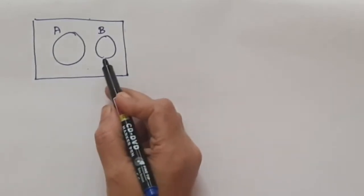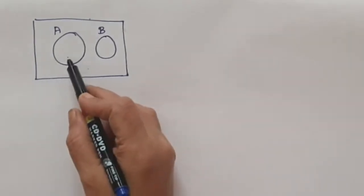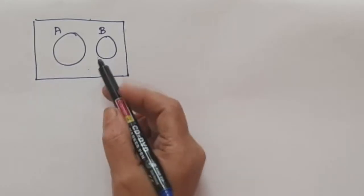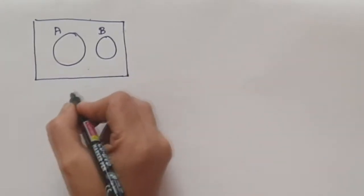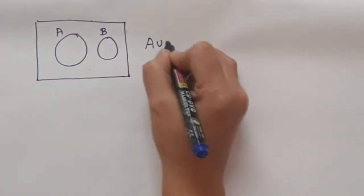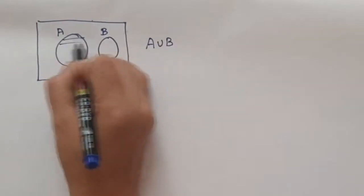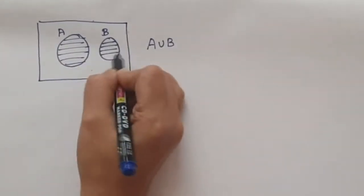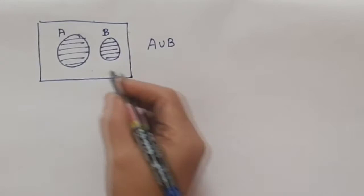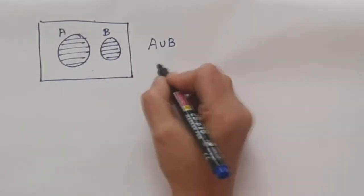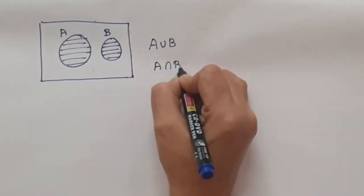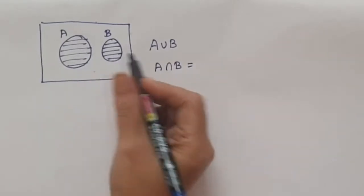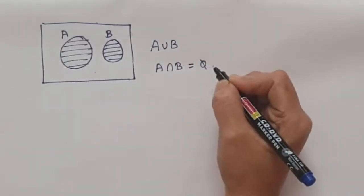Suppose if you have a diagram with two disjoint sets — that is, they are not in connection with each other. If you need to find A union B, you shade circle A and then circle B. This is A union B. Suppose if you need to find A intersection B, there is nothing in common between A and B, so it is a null set.